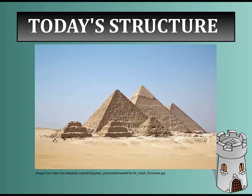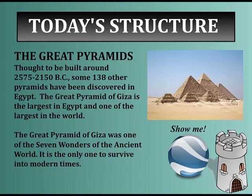Today's structure is the Great Pyramids at Giza. When we think of pyramids, these are the ones in Egypt that come to mind. They were built somewhere between 2575 and 2150 BC. About 138 other pyramids have been discovered in Egypt, but the Great Pyramid of Giza is the largest in Egypt and one of the largest in the world.